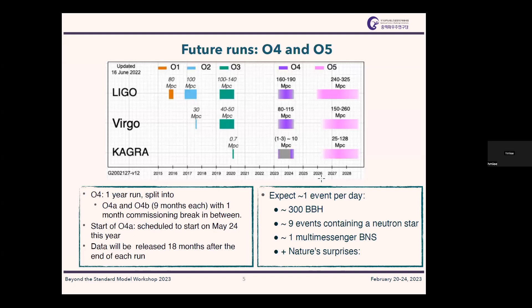We are about to start the fourth observing run, which was originally scheduled for early this year but was moved to May 24th — about two to three months from now. O4 will be an 18-month run, split into O4A and O4B of nine months each, with a one-month commissioning break in between. The data will be released 18 months after the end of each sub-run, giving full access to calibrated data.